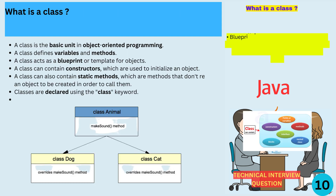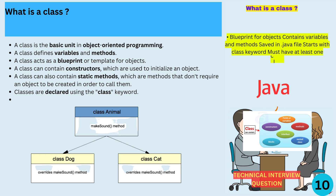A class is the basic unit in object-oriented programming. A class defines variables and methods, and acts as a blueprint or template for objects. A class can contain constructors, which are used to initialize an object, and static methods, which don't require an object to be created in order to call them. Classes are declared using the class keyword. Imagine a class called Animal — inside the class we could have variables like name, color, and size, methods like makeSound and eat, and a constructor that sets the name and color of the animal.